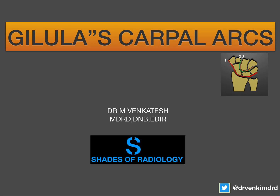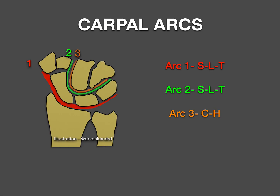Welcome back. Today I am going to discuss an important concept called Gilula's carpal arcs. The carpal arcs are three arcs usually seen on wrist X-ray AP radiograph. Arc 1 is the line drawn along the proximal cortical surfaces of the scaphoid, lunate, and triquetrum. Arc 2 consists of the distal articular surface of the scaphoid, lunate, and triquetrum. Arc 3 consists of the proximal cortical articular surface of the capitate and hamate. These three arcs should be smooth with no disruption.